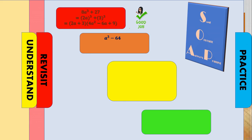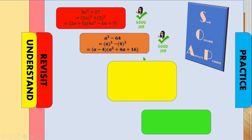Practice number two — please pause the video. We expressed it as the cubes of a and four. Get the cube root of the first and second terms. In the trinomial: square the first term (sign is opposite), multiply the first and second term, and the sign is always positive. Then square the last term.